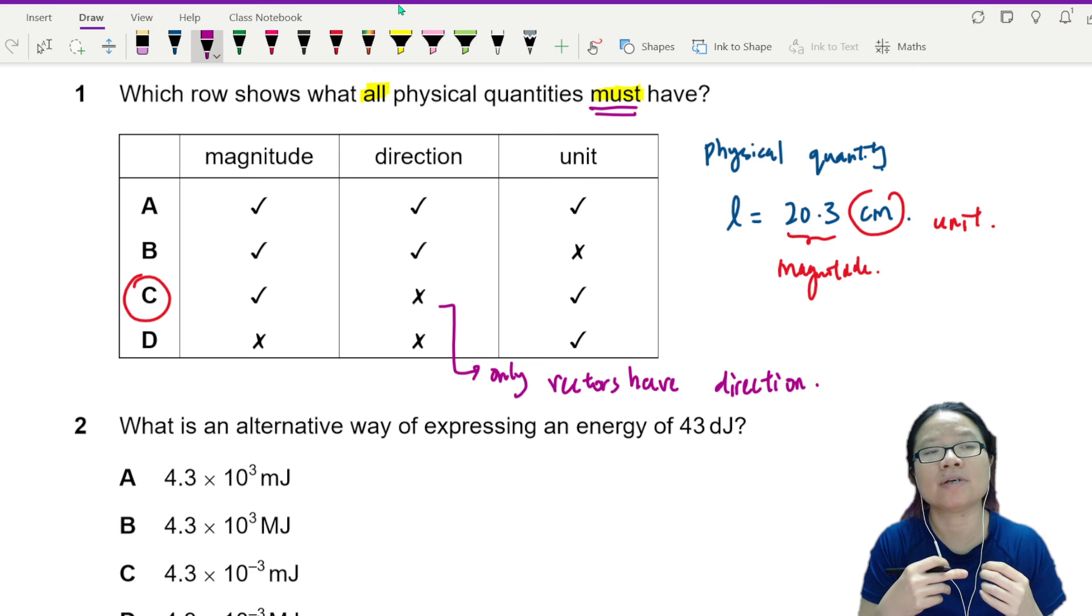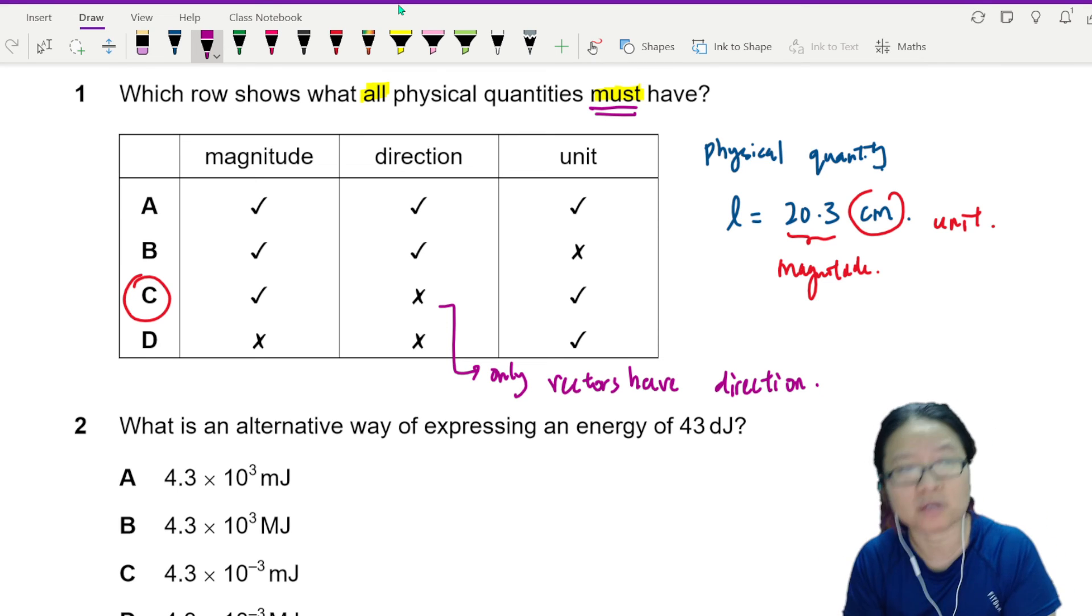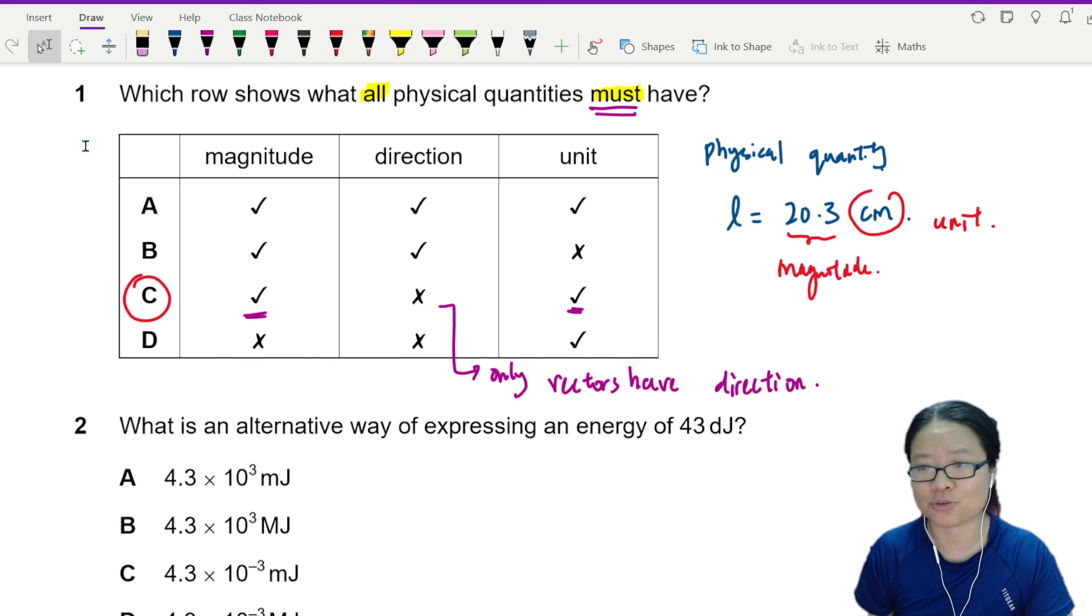So physical quantity doesn't, it's not a must to have direction, but it is a must to have magnitude, and it's a must to have a unit, or else we don't know what you're exactly measuring.